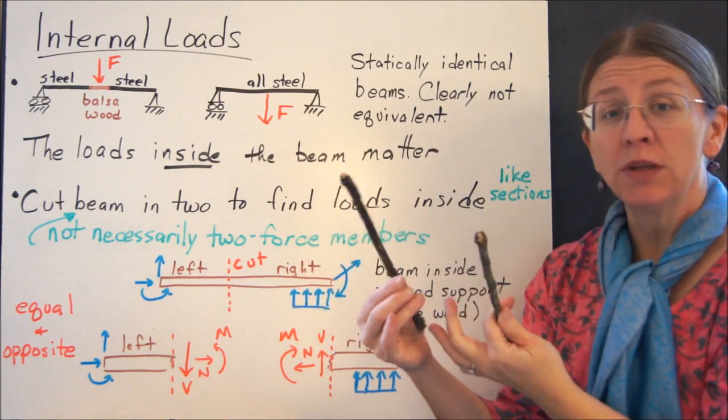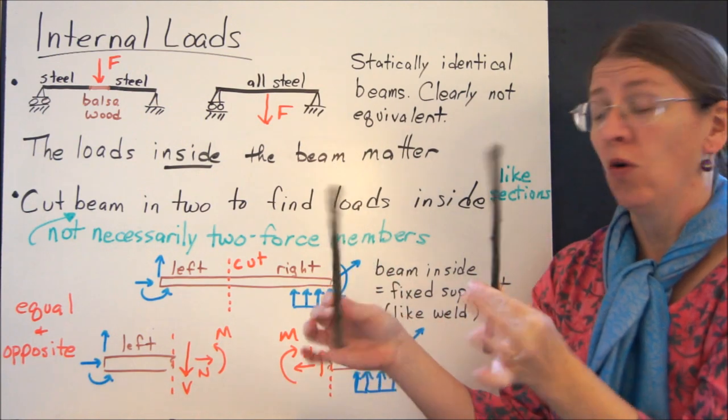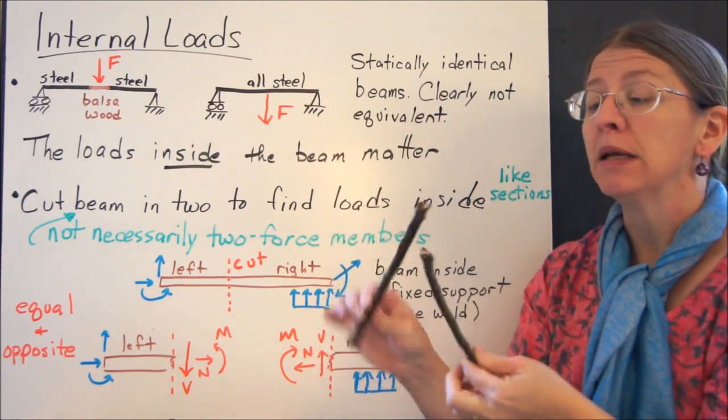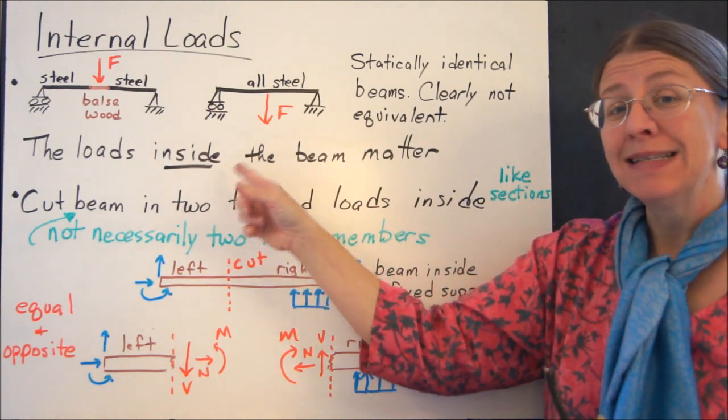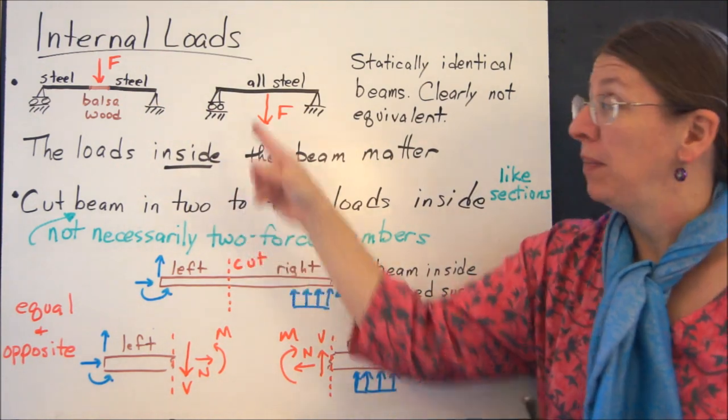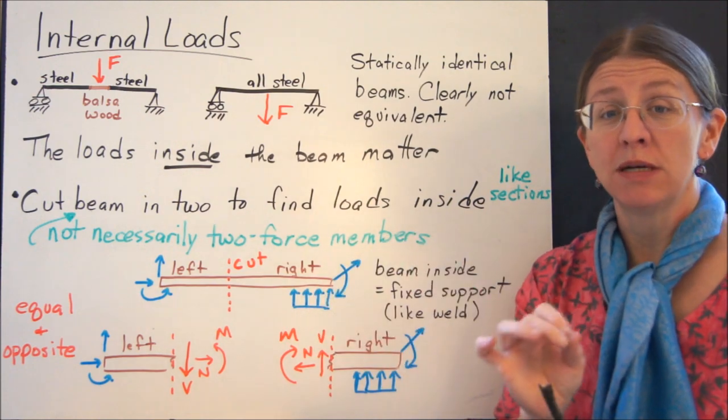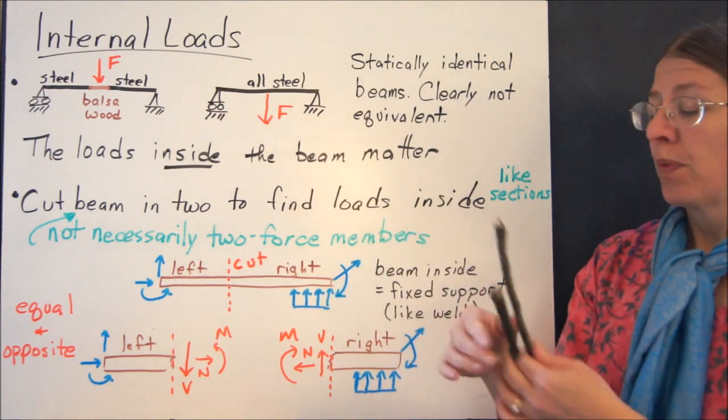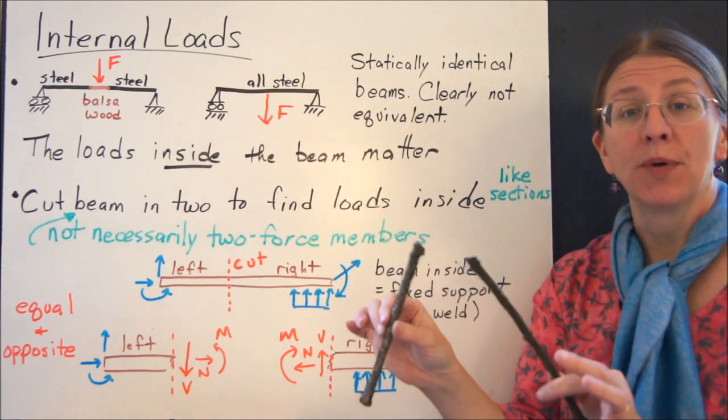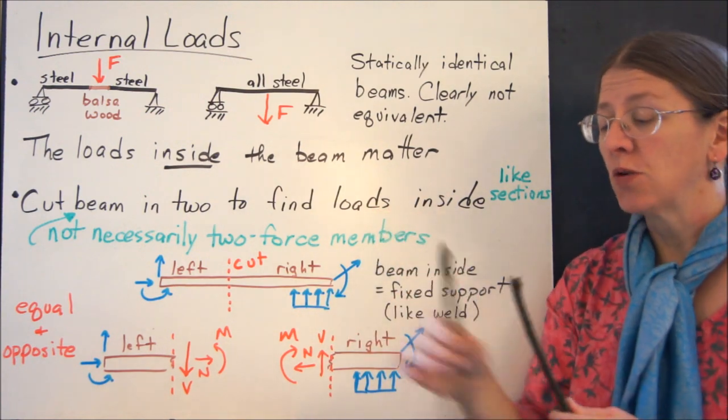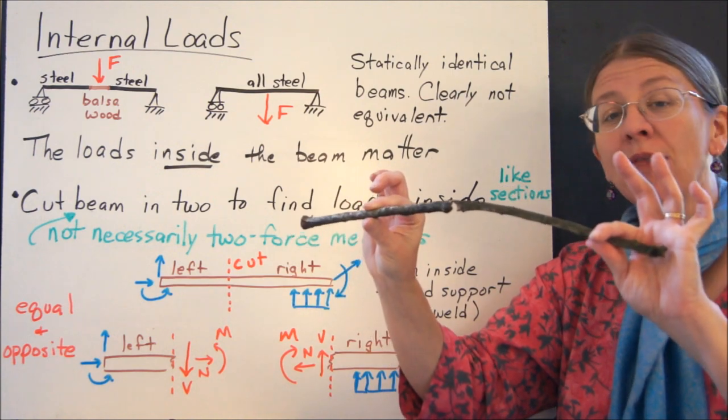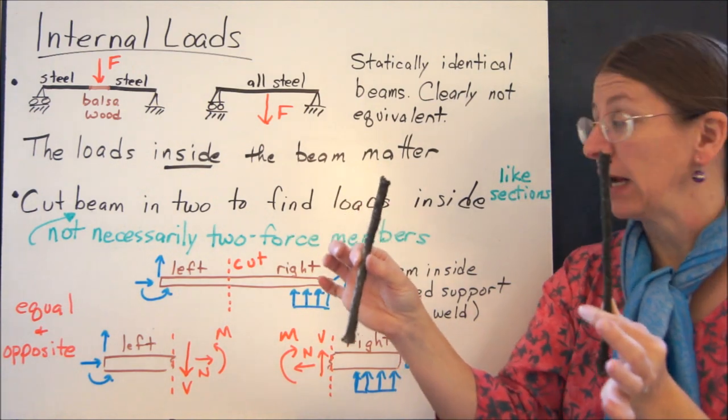What's happening in this... This one only has one material. It's oak all the way through. What happened in the middle of my stick? The loads that are inside the beam are going to matter, in addition to what the material is made out of. What happened when it broke?